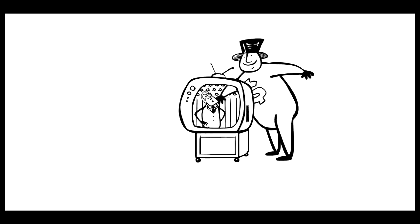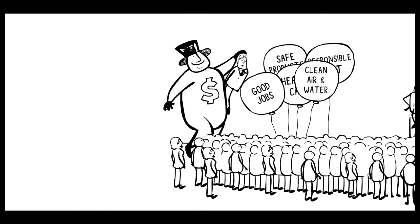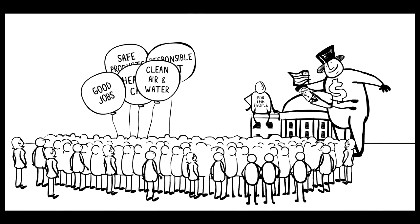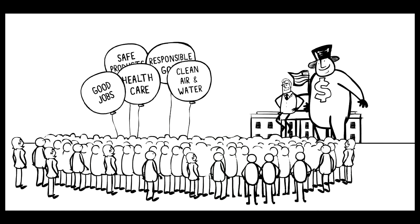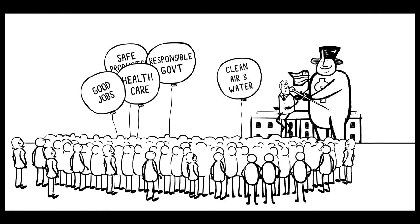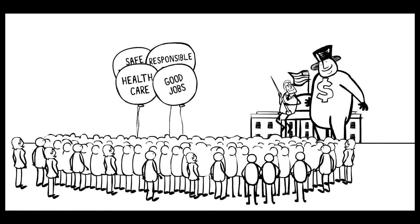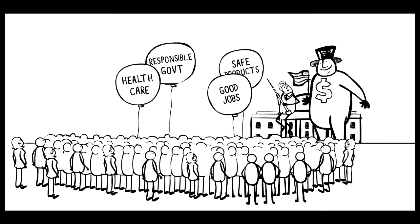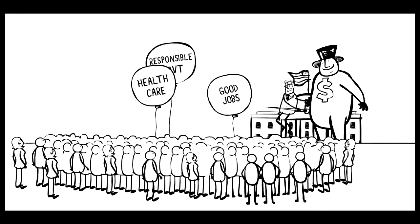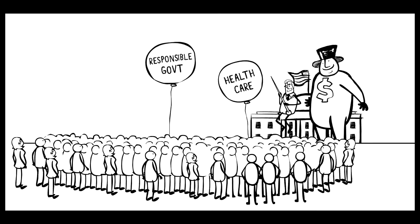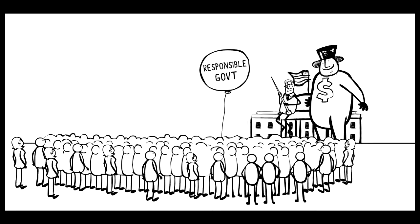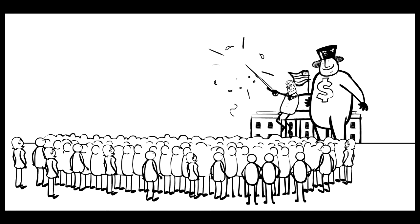But what people want is going to take a back seat as long as corporations can spend millions getting lawmakers elected. Oil companies have gotten politicians to block laws protecting our climate. Manufacturers have pushed through trade agreements that gut product safety and help ship jobs overseas. Insurance companies have been the first ones consulted on health reform and giant corporations have gotten bailouts and subsidies.